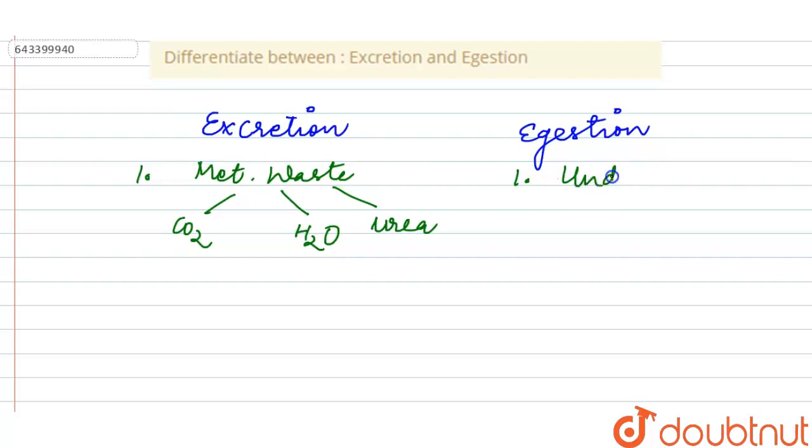The excretion occurs in both plants and animals, while egestion occurs only in the animals.